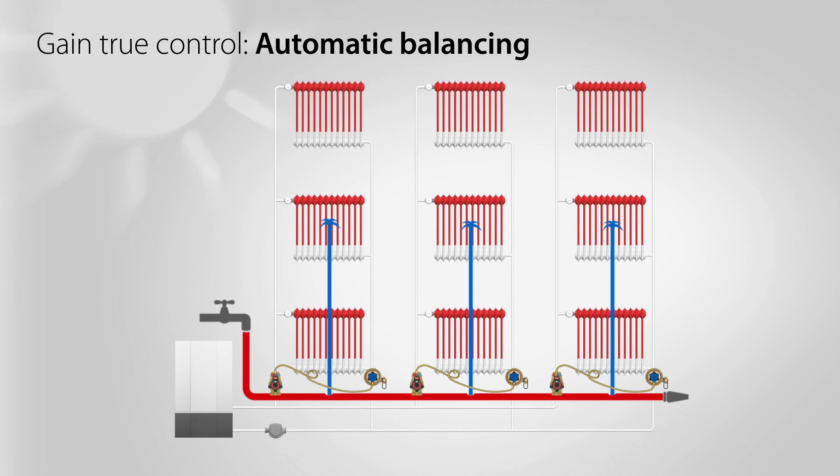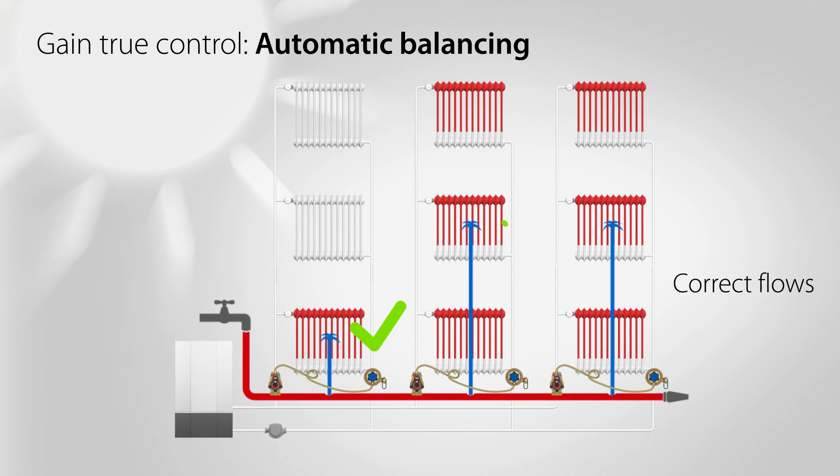In other words, if the load changes in parts of the building, the automatic balancing valves will ensure correct flow for each riser and maintain the required heat and comfort for all residents.